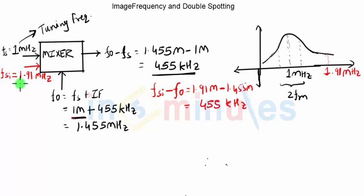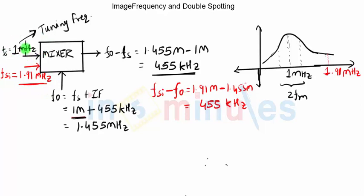Let us assume that FSI equal to 1.91 megahertz is a valid radio station. If that is the case, and if this signal is able to enter into the receiver, then it might get demodulated and we may get a sound output coming from the station at 1.91 megahertz, even though my receiver is right now tuned to 1 megahertz.